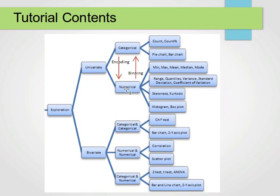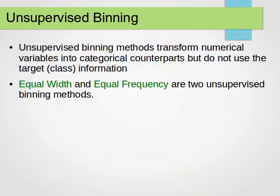Converting numerical variables into categorical variables — unsupervised is the second type of binning. The way it works is it transforms numerical variables into categorical variables, but it does not use the target or class information. So we do it regardless of the class, unlike the entropy-based method we learned in the last video.